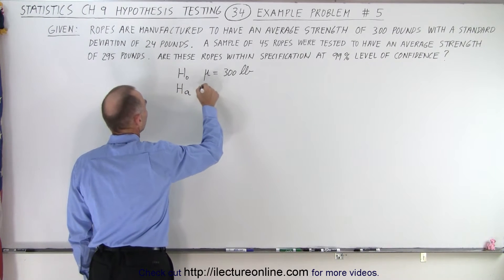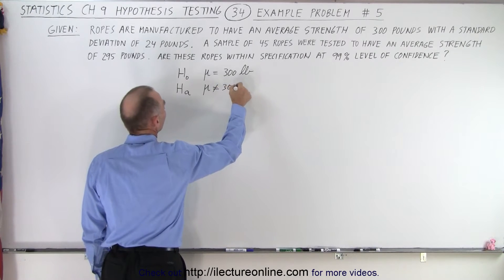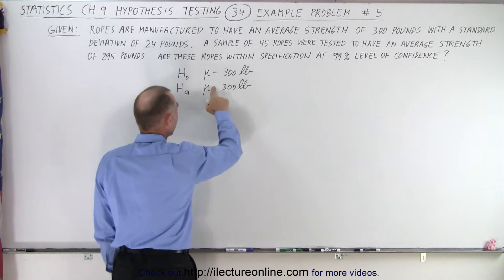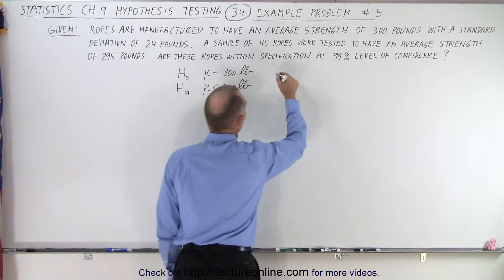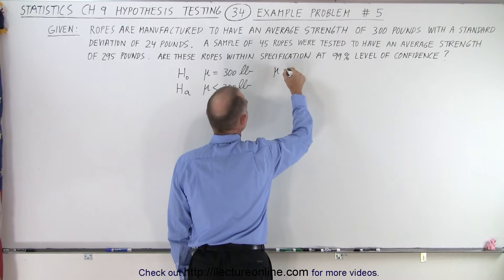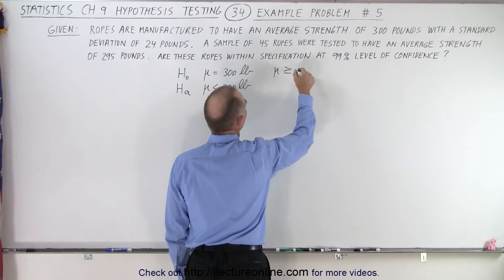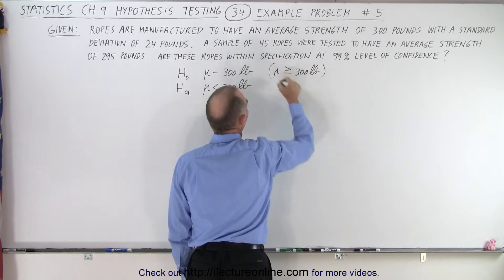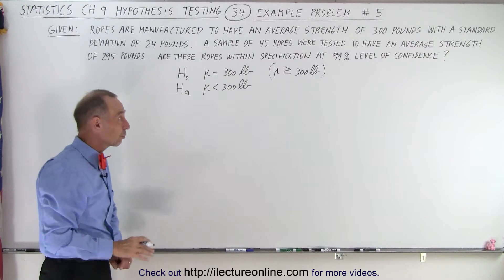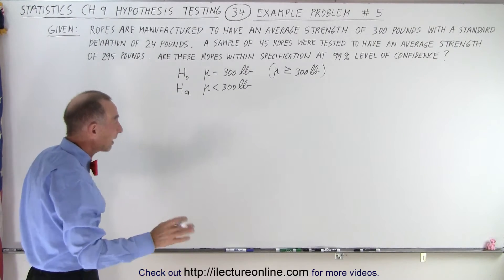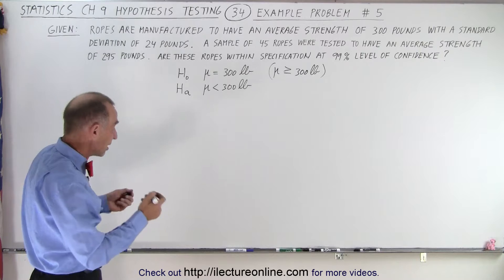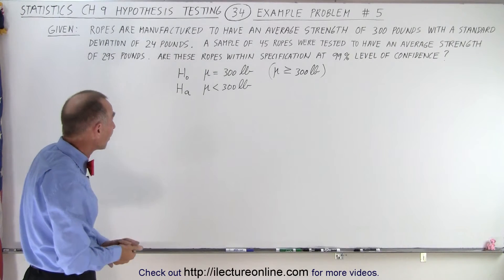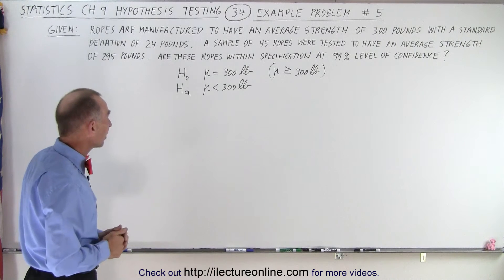The alternate hypothesis is that the average is not equal to 300 pounds — specifically that it would be less than 300 pounds. That's the concern. So the null hypothesis implies that the strength of the ropes is good enough: 300 pounds or more would be good, but less than 300 pounds would be bad — that's the alternate hypothesis. We're going to set up a test to see if the null hypothesis is going to be rejected or not rejected based upon the information we have.